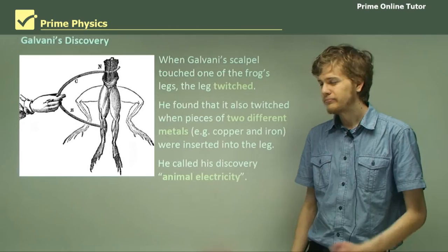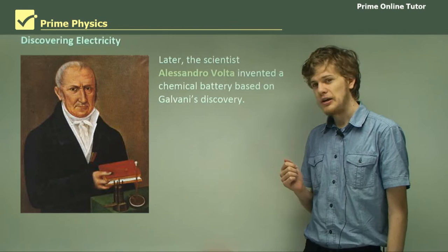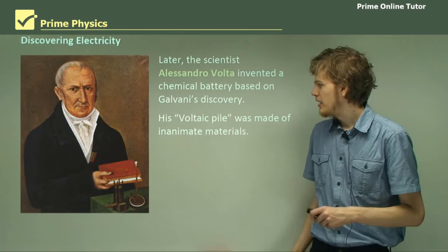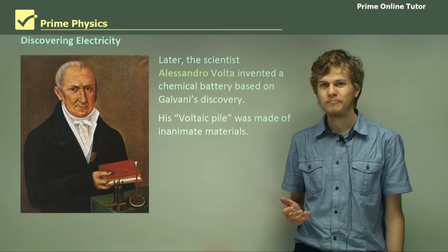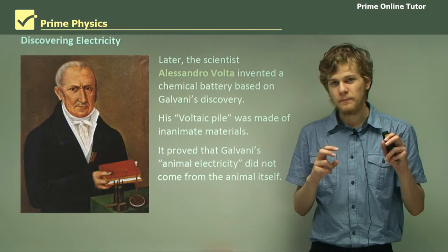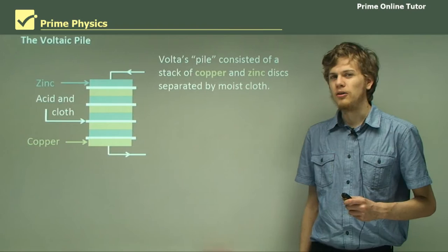Not everyone agreed with his views, though. Later, this scientist, Alessandro Volta — who later became Count Alessandro Volta — invented a chemical battery based on Galvani's discovery. The thing about this battery is it was built out of only inanimate materials; it didn't contain any part of a living thing. The voltaic pile contained only metal and cloth. So it proved that Galvani's animal electricity wasn't actually part of the animal — it came from the metals that he was using to poke the frog's legs with.